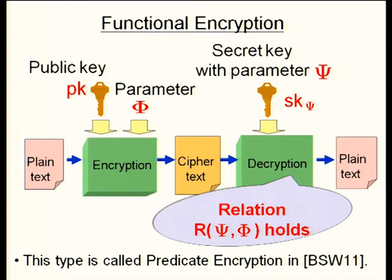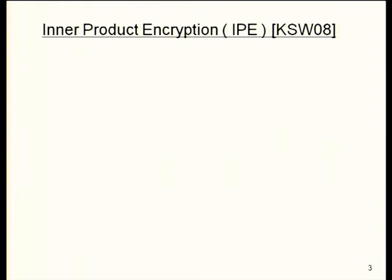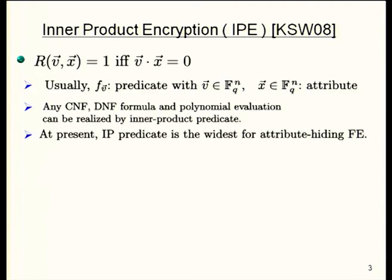We deal with this type of encryption, and in particular, the inner product predicate, where the predicate relation R is defined as vector orthogonality between two vectors, vector v and vector x. Usually one parameter vector is associated with some predicate, and the other one is the attribute. Using this predicate, any CNF and DNF formulas and polynomial evaluation can be realized.